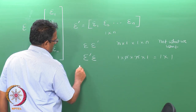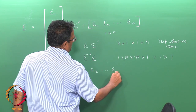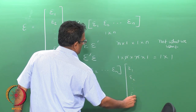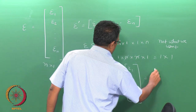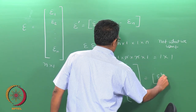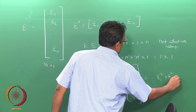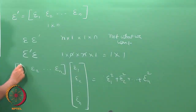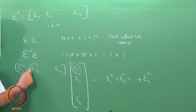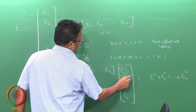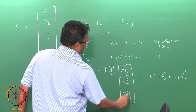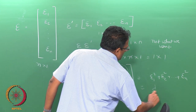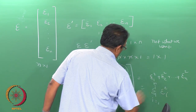What is ε'ε? You have [ε₁, ε₂, ..., εₙ] times the column vector [ε₁, ε₂, ..., εₙ], and you get ε₁² + ε₂² + ... + εₙ². So ε₁ is multiplied with ε₁, ε₂ is multiplied with ε₂, so on to εₙ multiplied with εₙ, giving us Σεᵢ², i running from 1 to n.